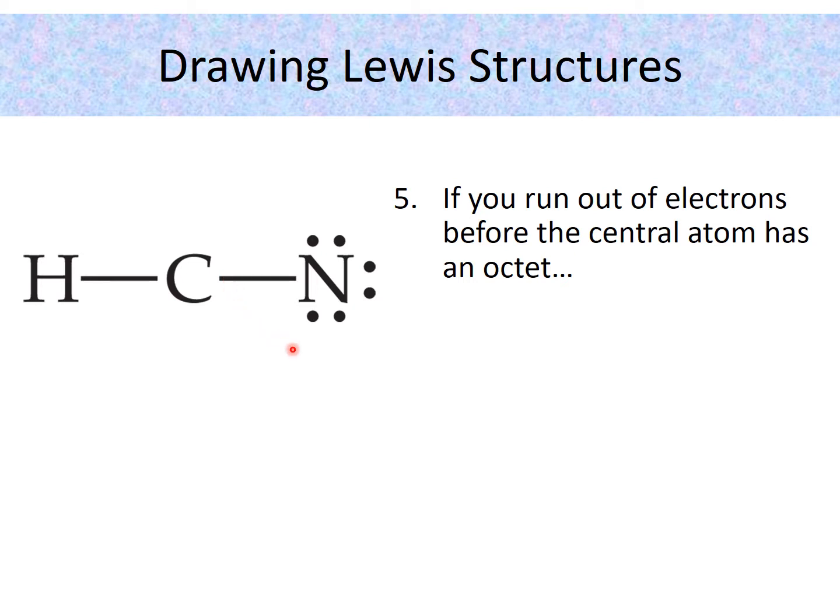So what would we do in that case? This is when we think about forming multiple bonds, such as double bonds or triple bonds. Now do not try to start with double bonds or triple bonds in step one. This is the time we start is when we have already reached zero electrons left and we do not have a complete octet on the central atom. So in other words, the last step you want to do is with multiple bonds. Don't try it in the beginning.